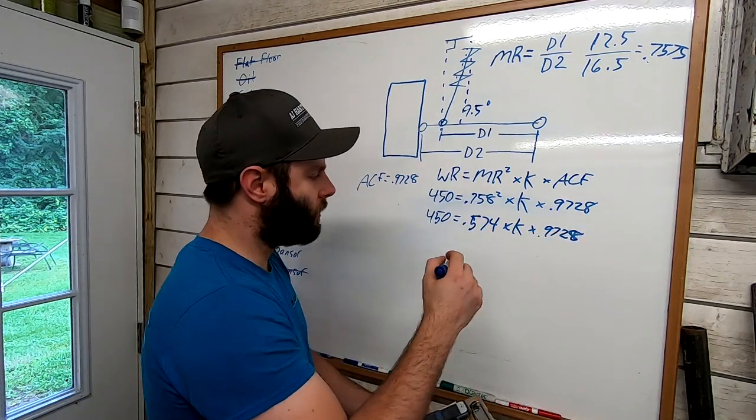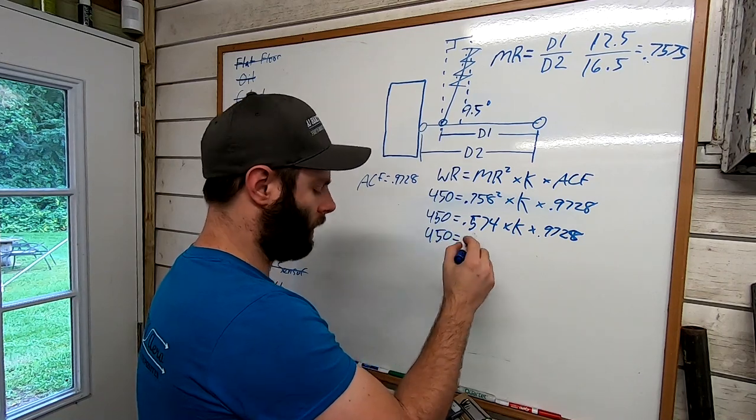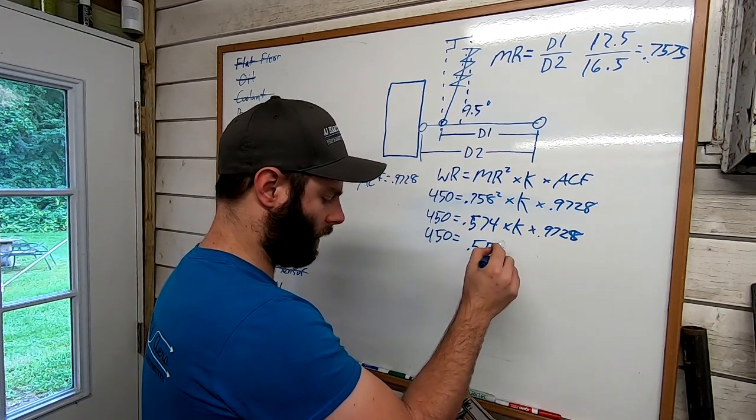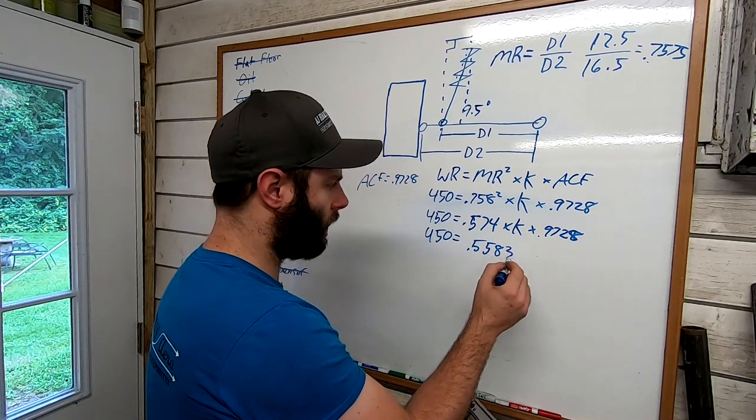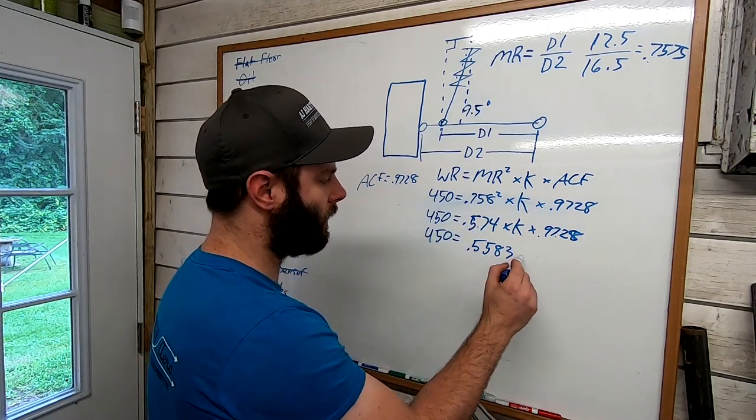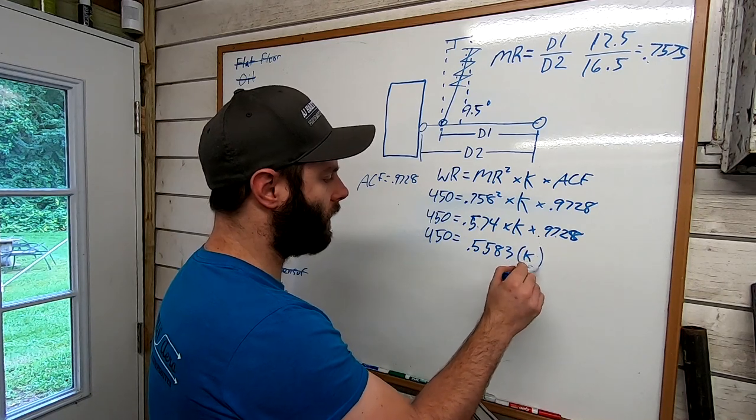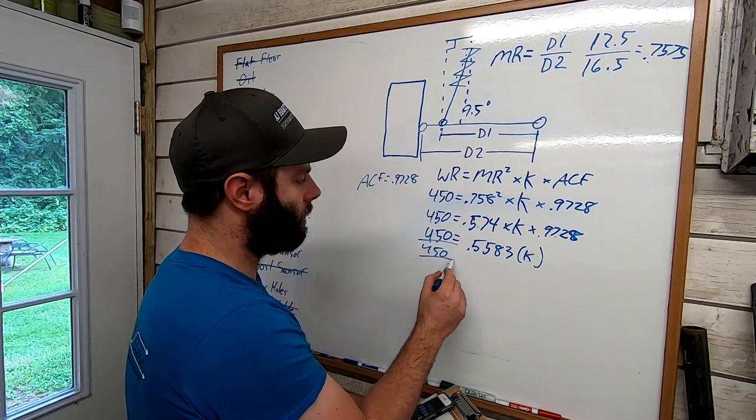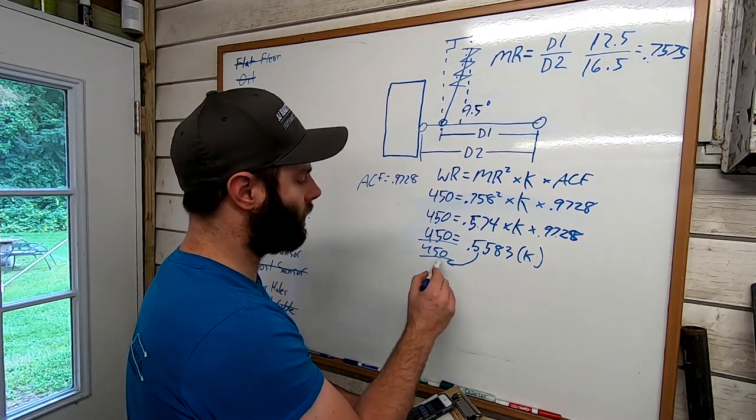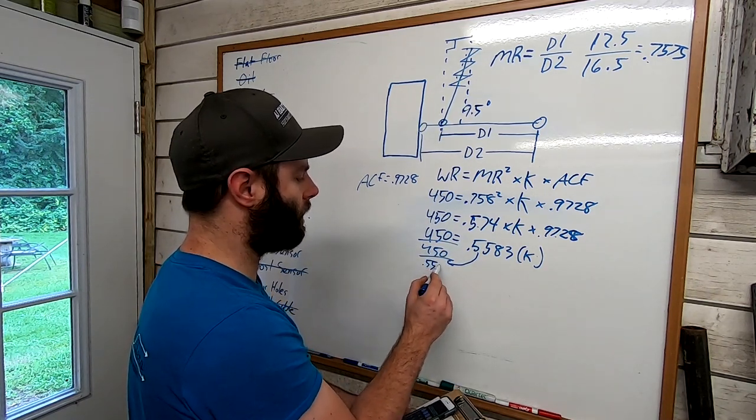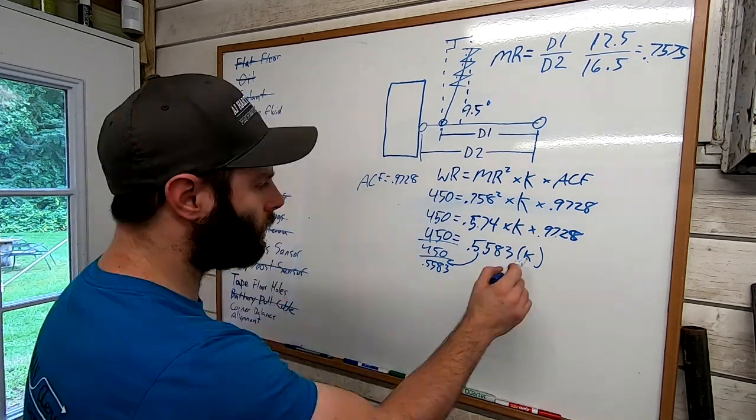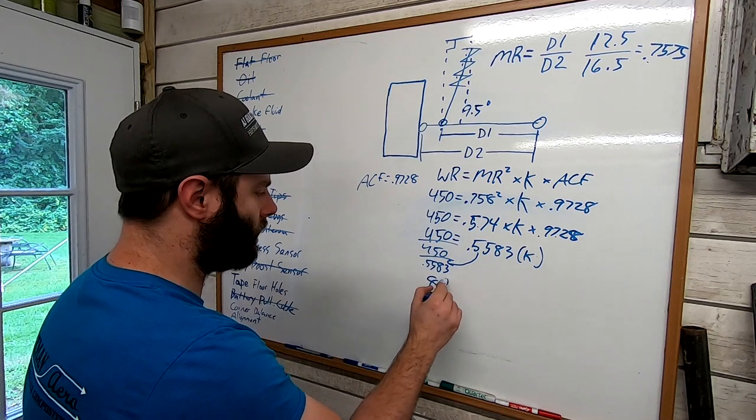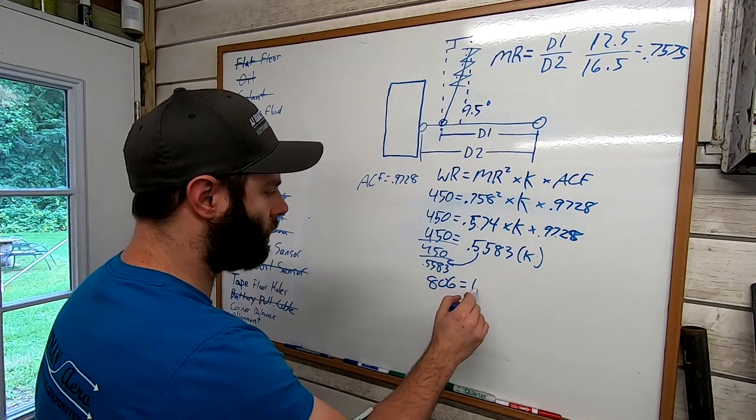So just continuing the equation, 450 equals 0.5583, which is this number times this number, times K. Now you just divide the 450 by this, comes over 0.5583, and then you're left with this equation equals 806 equals K.